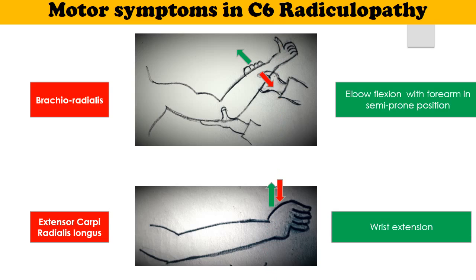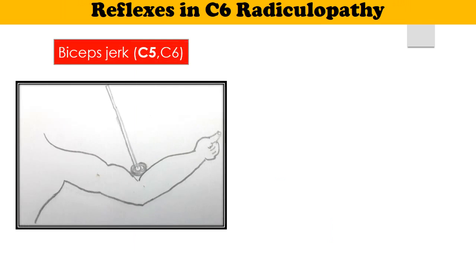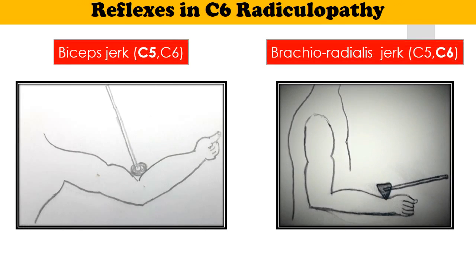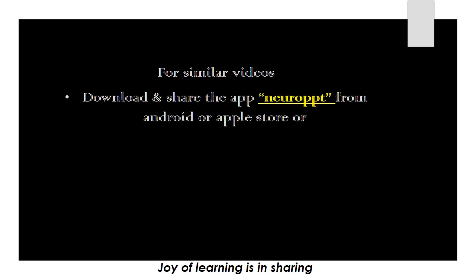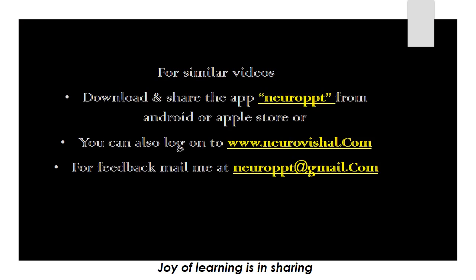Remember, this also tests the extensor carpi ulnaris and extensor digitorum communis. In C6 Radiculopathy, the reflexes which can be depressed or absent are the biceps reflex and brachioradialis jerk.